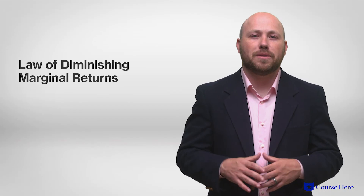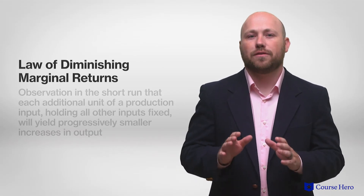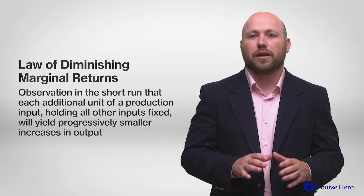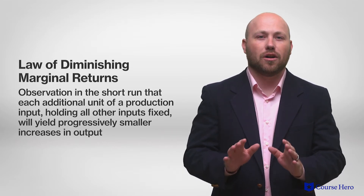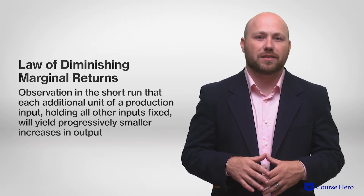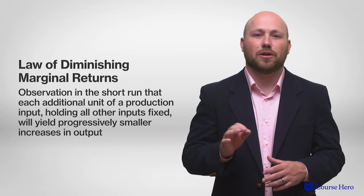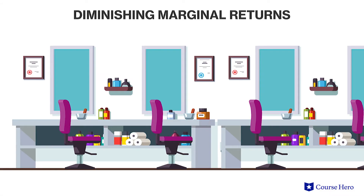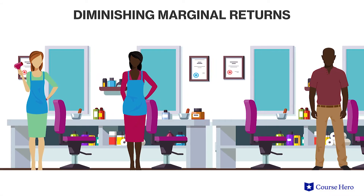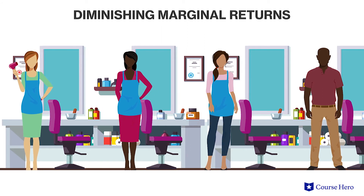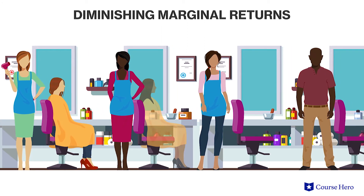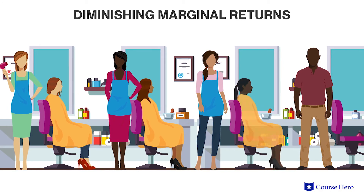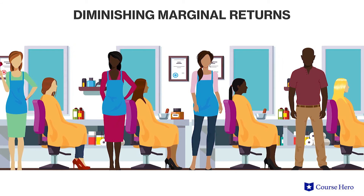The law of diminishing marginal returns is the observation in the short run that each additional unit of a production input, holding all other inputs fixed, will yield progressively smaller increases in output. Increasing the number of stylists, for example, yields fewer and fewer additional units of output because the size of the shop is limited, and only so many stylists can fit before they begin running into each other.